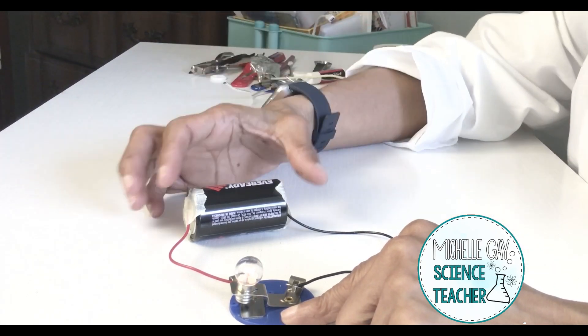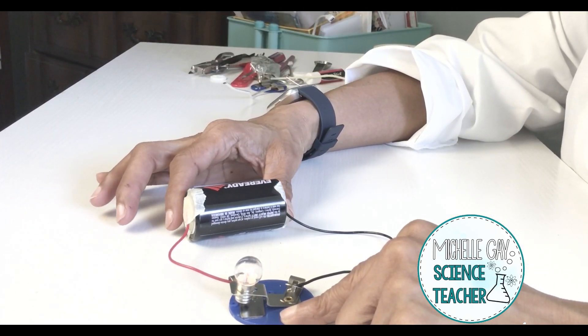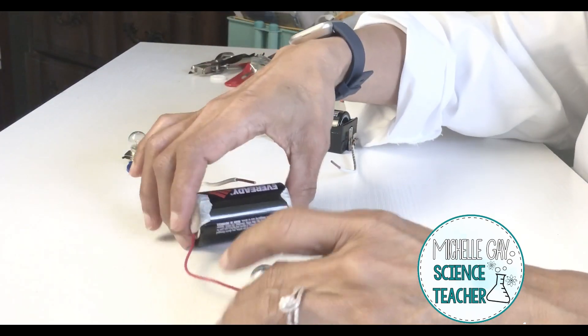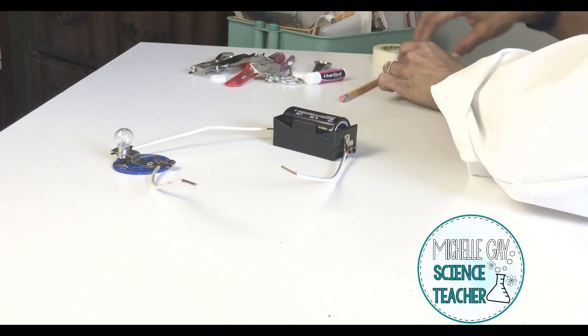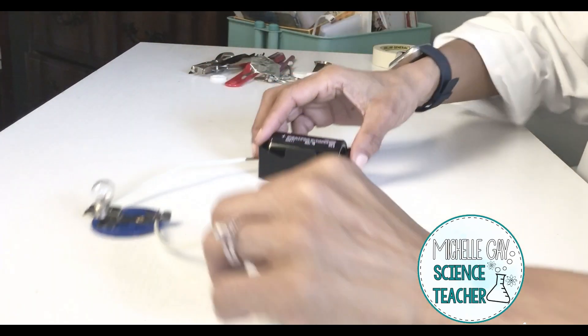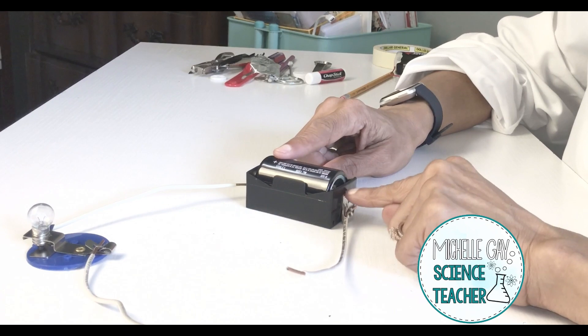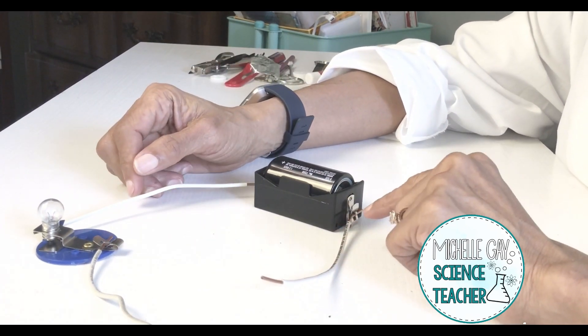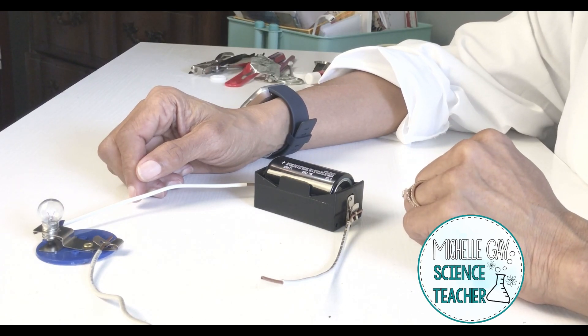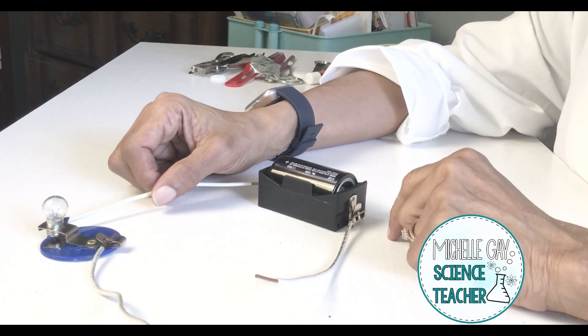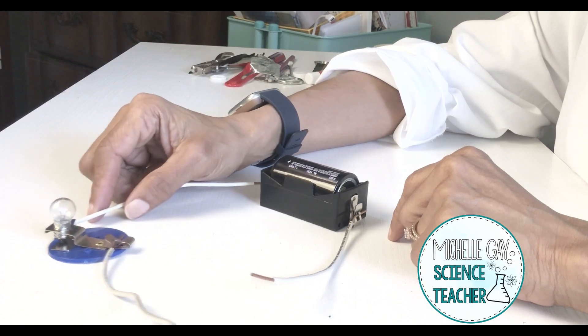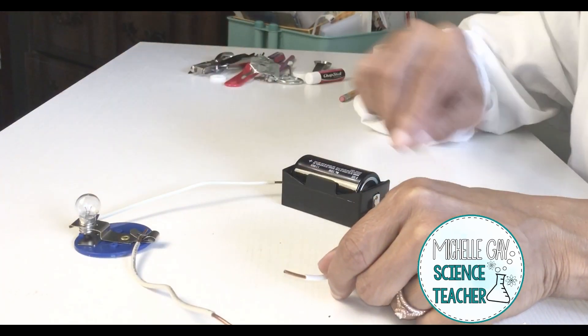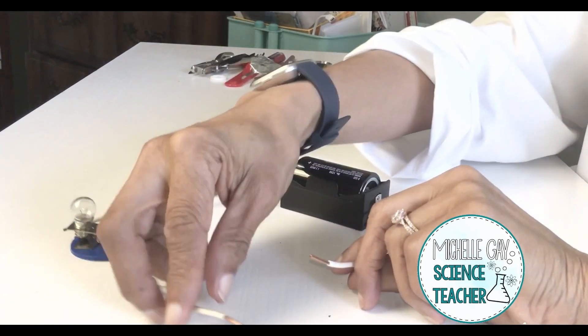With this particular one, I did not use a battery holder, but I've made another one. This one has a battery holder. This is the one we're going to use for conductors and insulators to test out. So this is not a complete circuit and the bulb is not on. But let's touch the two wires together and see what will occur.